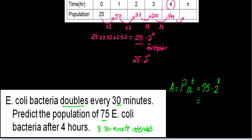With your calculator, do not multiply 75 times 2 and then raise to the 8th power — always do your exponents first. So you multiply 75 times 2 to the 8th power. 2 to the 8th power is 256, and then you multiply that by 75. You will have a total of 19,200 bacteria by the end of the 4th hour. And there's your example.